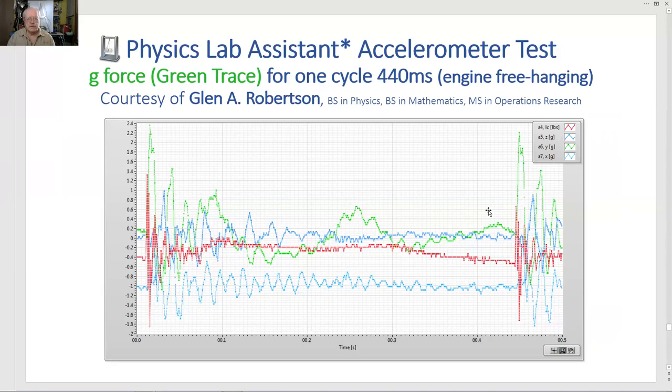Okay. This is the G-force. We use the Physics Lab Assistant Accelerometer Test Program. As you can see, the green trace goes up past two Gs. Now, remember this trace form, because you will see it again under a load cell test. And this is very interesting. We're going to take a close look at the load cell trace form, which is very similar to this pattern. Again, this engine was free hanging.